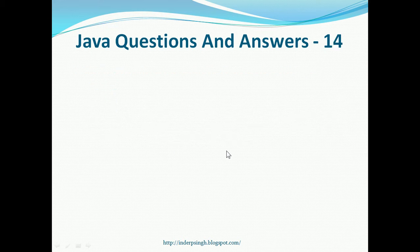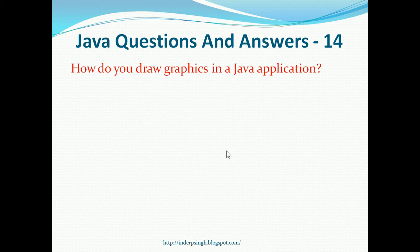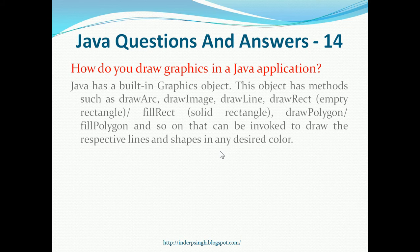Question 14. How do you draw graphics in a Java application? Java has a built-in graphics object. This object has methods such as drawArc, drawImage, drawLine, drawRect for an empty rectangle, fillRect for a solid rectangle, drawPolygon, fillPolygon and so on. These methods can be invoked to draw the respective lines and shapes in any desired color.